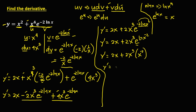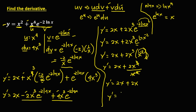We now have y prime equals 2x plus 2x to the power 3 times x to the power negative 2. Since the exponent is negative, bring it down: 2x to the power 3 over x squared. We can cancel x squared, leaving 2x to the power 1, or simply 2x. So y prime equals 2x plus 2x, which gives 4x. This is the derivative.